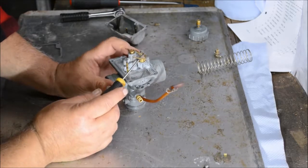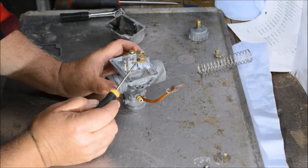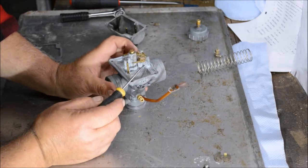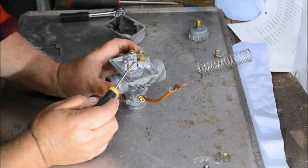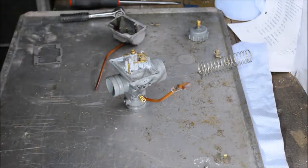Look how positive and springy that is. On the other carb, on the right-hand carb that was flooding, that spring was really worn out. There was basically no resistance, no movement. So hopefully by putting the new valve assembly in, that's going to stop the flooding problem that the bike was having.